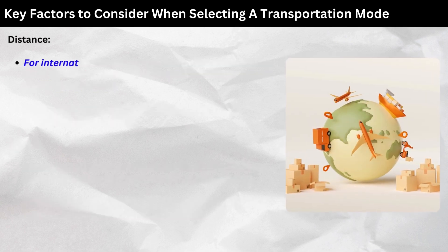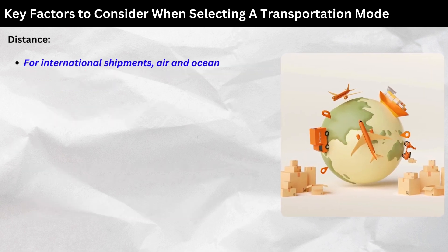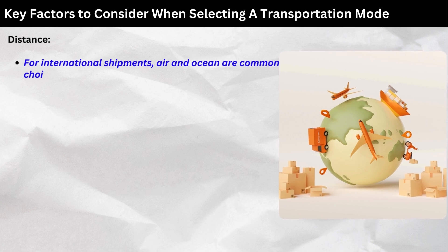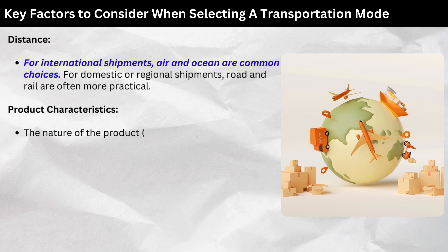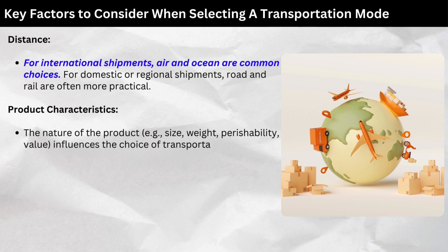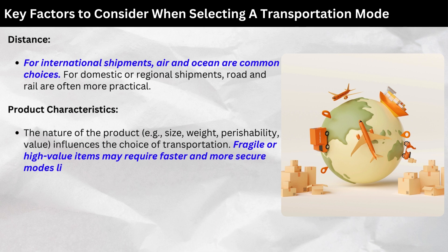Distance: For international shipments, air and ocean are common choices. For domestic or regional shipments, road and rail are often more practical. Product characteristics: The nature of the product — e.g., size, weight, perishability, value — influences the choice of transportation. Fragile or high-value items may require faster and more secure modes like air or road.